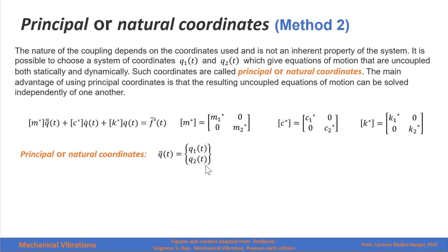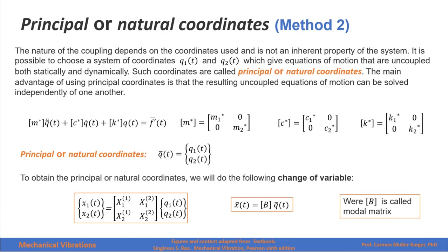We have the vector of principal coordinates, which is q1 as a function of time and q2 as a function of time. To obtain the principal or natural coordinates, we perform the following change of variable: our generalized coordinates will be equal to the modal matrix — found when we determined the vibration modes of our system — multiplied by the vector of principal or natural coordinates.